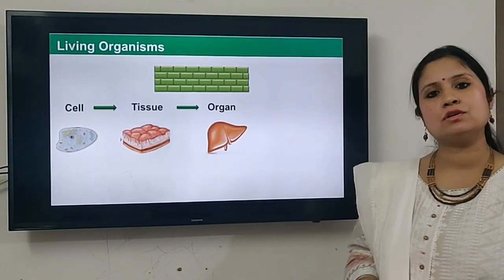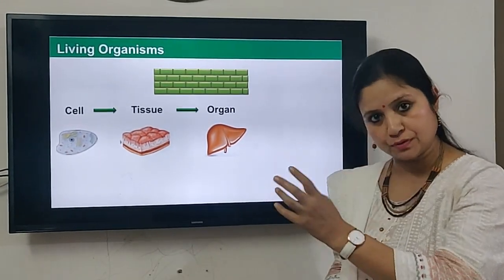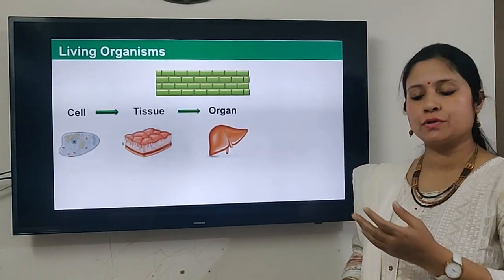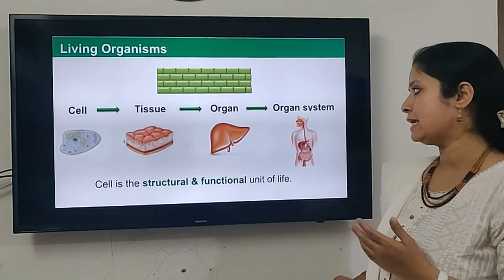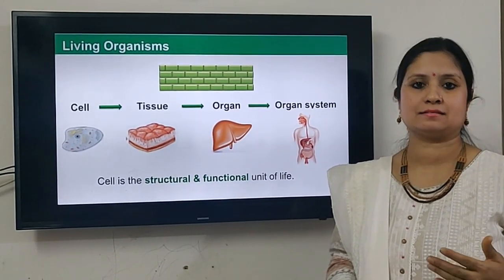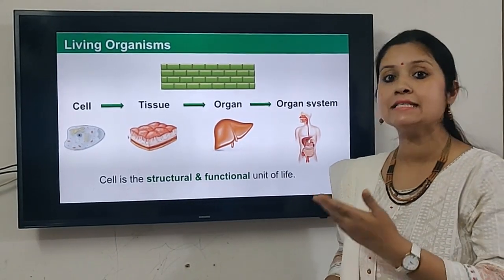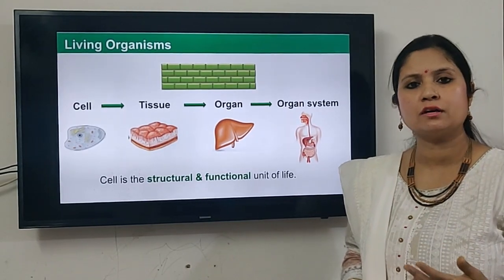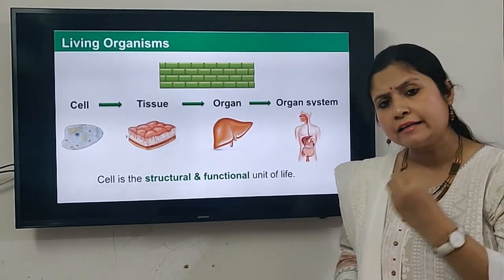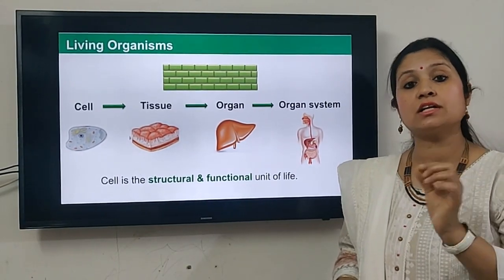In multicellular organisms like us, cells combine together to make tissues — a group of cells. Tissues combine together to make an organ, and organs combine together to make an organ system, which makes up a complete organism. So cells provide structure to our bodies, which is why cell is defined as the structural unit of life.